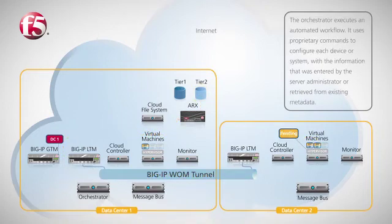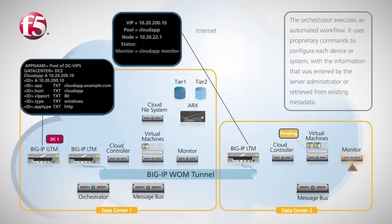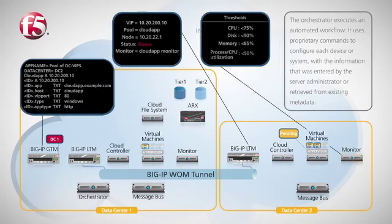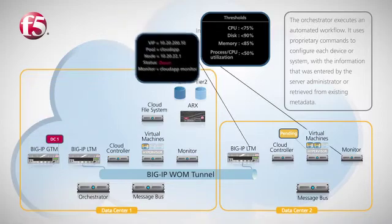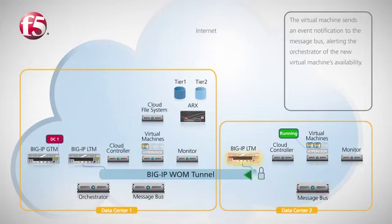Once the orchestrator receives the event notification, it executes an automated workflow. The orchestrator uses proprietary API or CLI commands to configure each device or system involved, using the information that was originally entered by the server administrator or retrieved from the existing metadata. Once the virtual machine is up and running, it sends an event notification to the message bus, alerting the orchestrator that the new virtual machine is available.